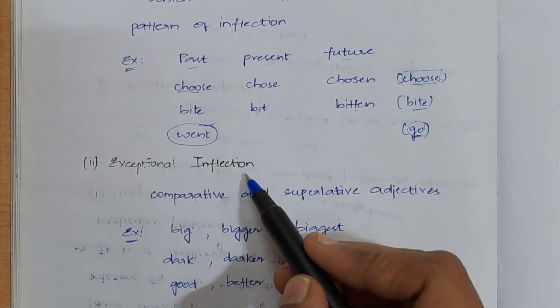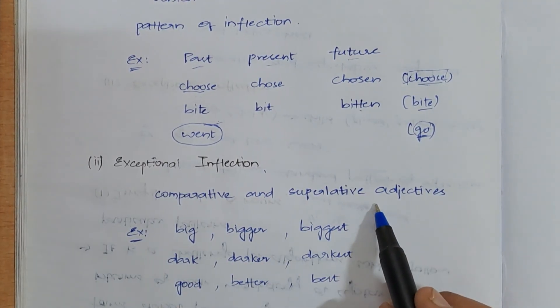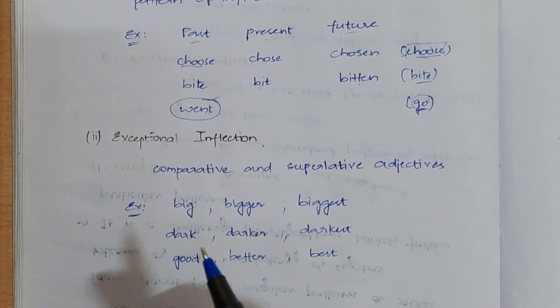And then, we will be having exceptional inflection. What is this exceptional inflection? It is mainly caused by comparative and superlative adjectives. What are these comparative or superlative adjectives? Take an example.